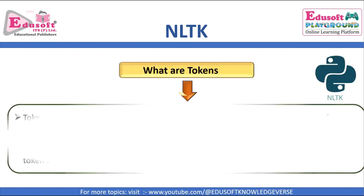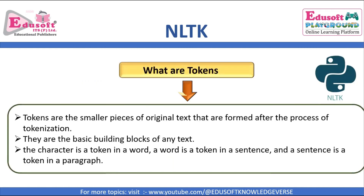Coming to tokens — what are tokens? Tokens are the smaller pieces of original text that are formed after the process of tokenization. They are the basic building blocks of any text. A character is a token in a word, a word is a token in a sentence, and a sentence is a token in a paragraph. So if we perform tokenization on a paragraph, then the sentence is the token. If we perform tokenization on a sentence, then the word is the token. And if we perform tokenization on a word, then the character is the token.